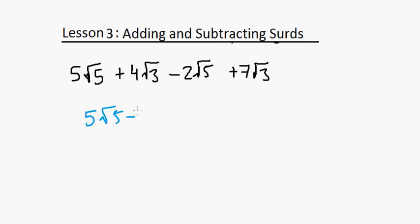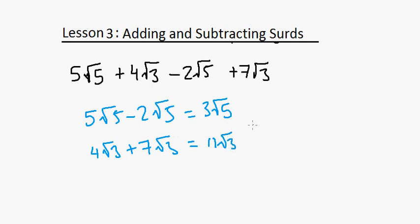So 5√5 - 2√5. It's simply 5 minus 2, which is 3, so it's 3√5. And now we have the other term, which is 4√3 + 7√3 equals 11√3. So now your final simplified form is 3√5 + 11√3, which is the same as 3A + 11B like we got at the start.